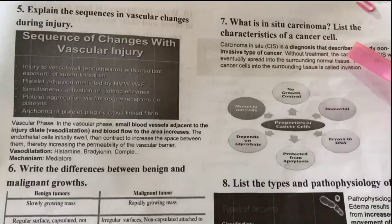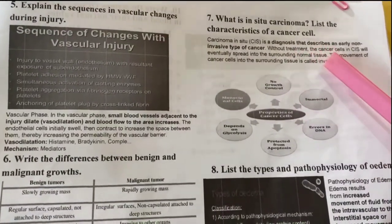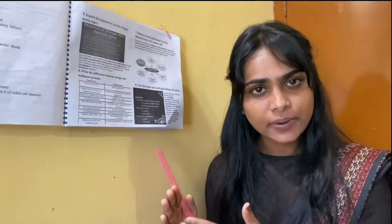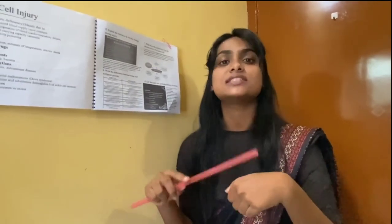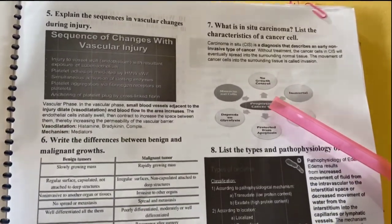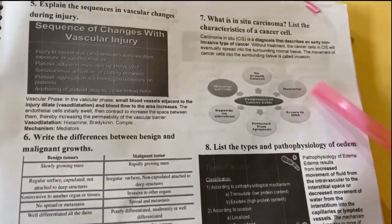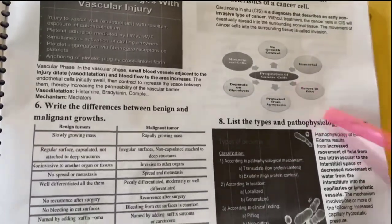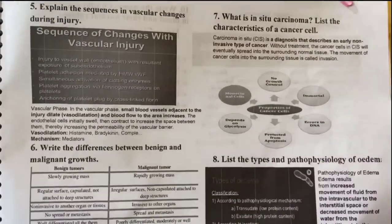Next question: what is carcinoma in situ? Carcinoma in situ is a diagnosis that describes an early, non-invasive type of cancer — it doesn't spread to other parts of the body; if it has occurred in the hands it will stay in the hands. Characteristics of cancer cells include: no growth control — cancer cells keep growing rapidly; they are immortal — cell death or necrosis does not occur; there will be DNA errors in cancer cells; and they are protected from apoptosis.